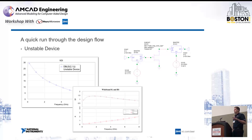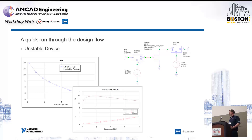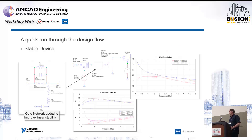If we just look at the device when it's biased up — 50 ohms at the input, 50 ohms at the output — there's quite a lot of low-band gain, which means it's obviously not stable. We have to go above 4 GHz before the small-signal linear stability factor K gets above 1. So the first thing to do is address that situation.